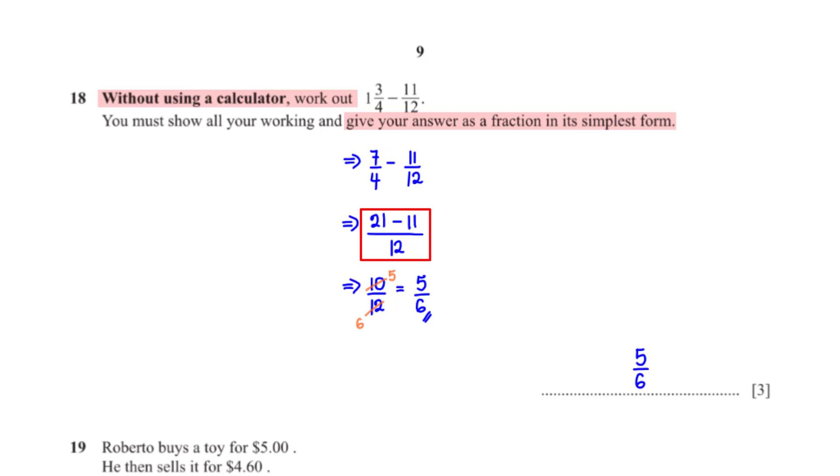For 7 over 4, since we multiply the denominator by 3 to get the LCM, we also need to multiply the numerator by 3. So 7 times 3 is 21. For 11 over 12, since we multiply the denominator by 1 to get the LCM, we also need to multiply the numerator by 1. So 11 times 1 is 11. 21 minus 11 is 10. 2 goes into 10 5 times and goes into 12 6 times. So we have 5 over 6.